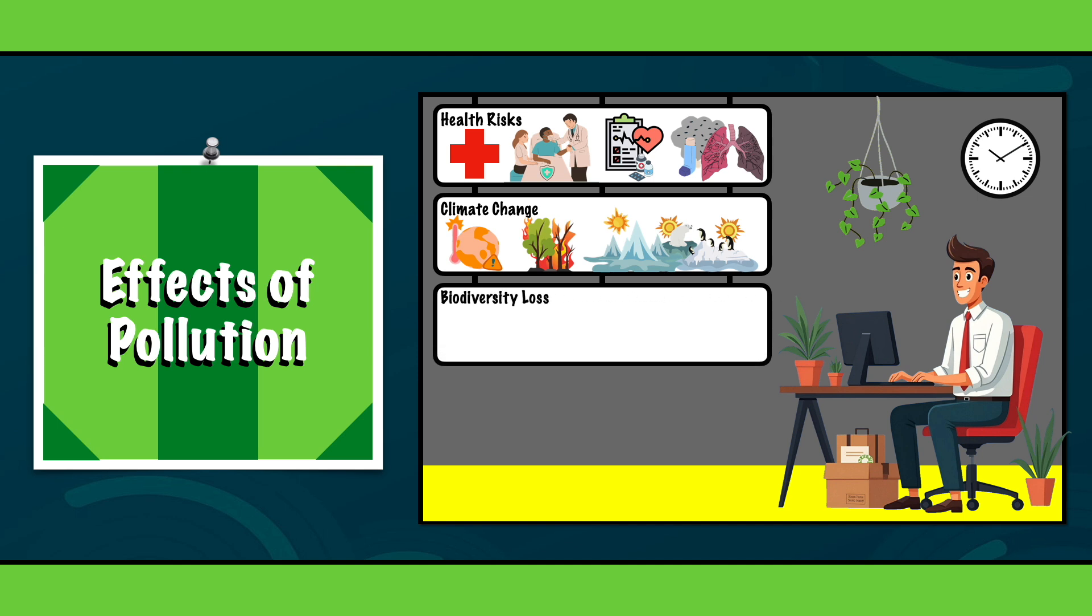Biodiversity loss. Pollution destroys habitats and poisons wildlife, leading to the extinction of many species. For example, plastic in the ocean kills millions of marine animals every year.